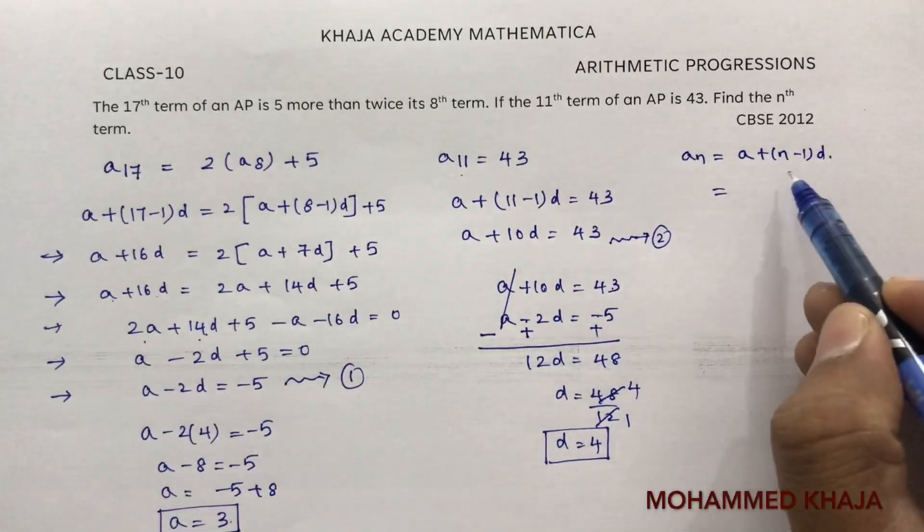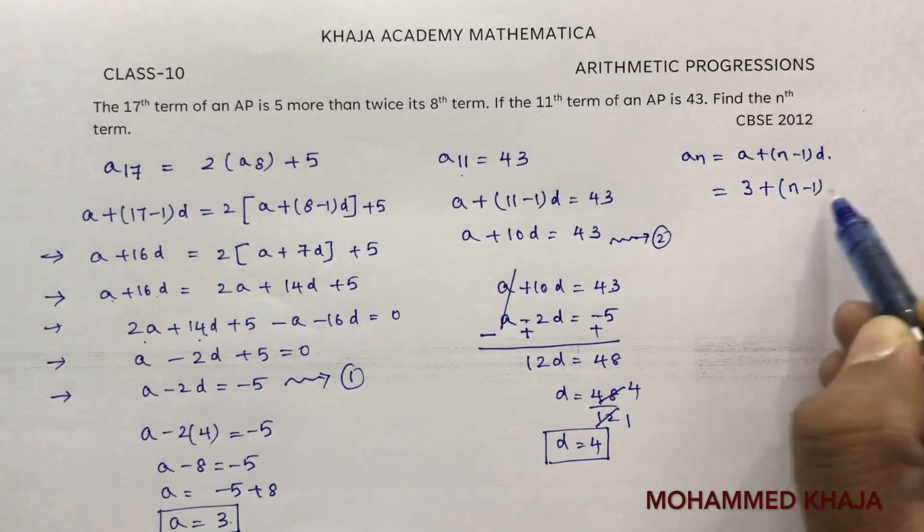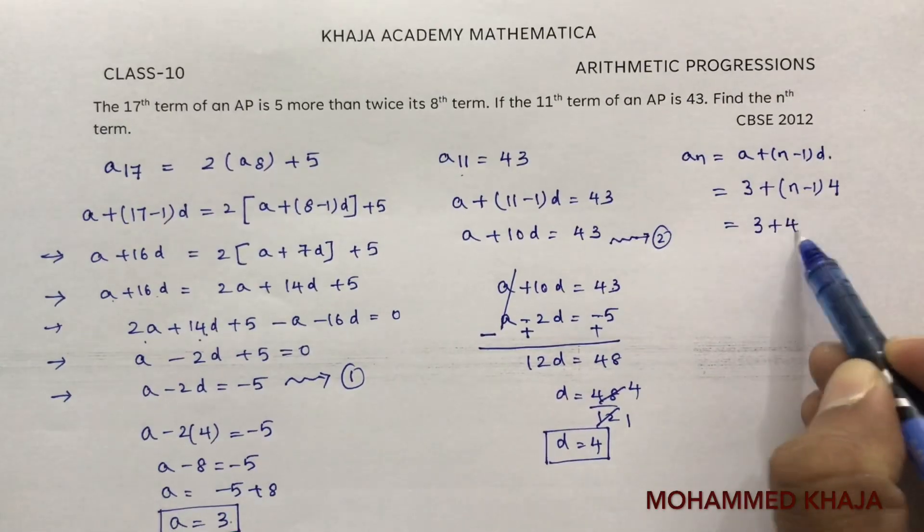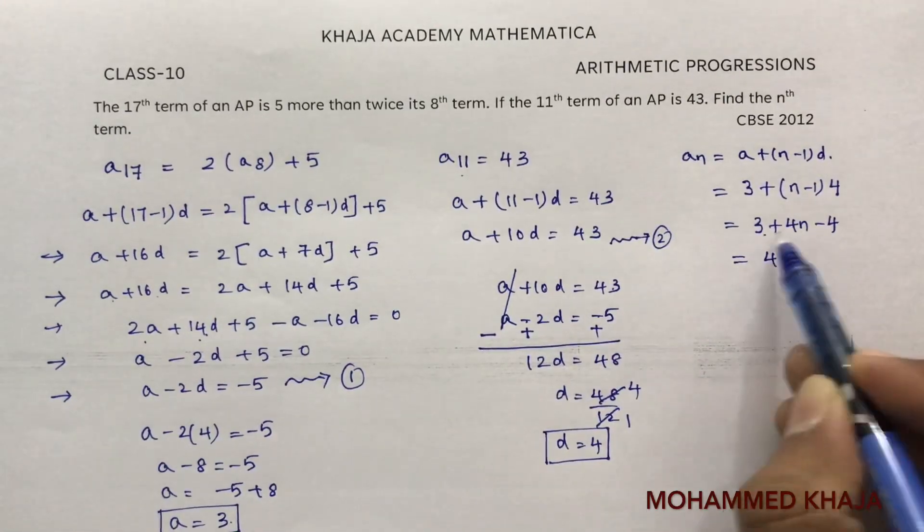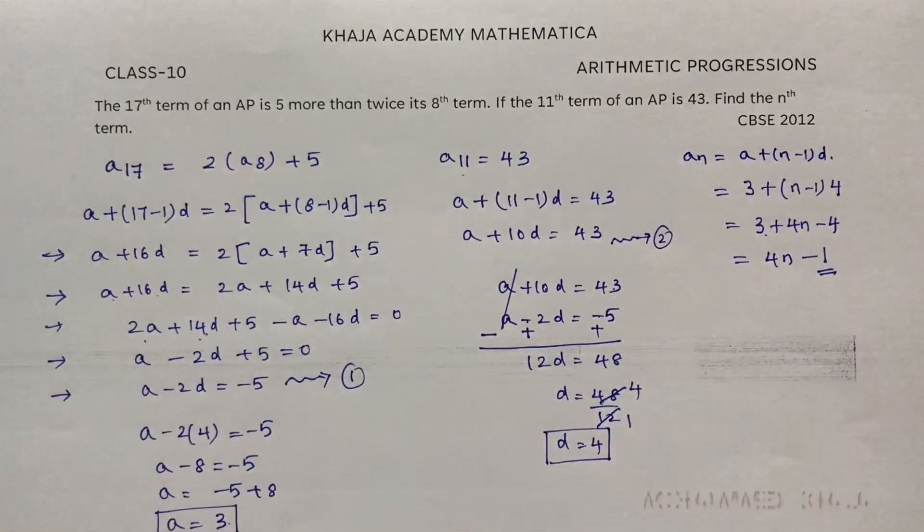Now with a and d we need to find nth term. So an is a plus n minus 1 into d. a is 3 plus n minus 1 into 4. That's 3 plus 4n minus 4, which equals 4n minus 1. This is the nth term.